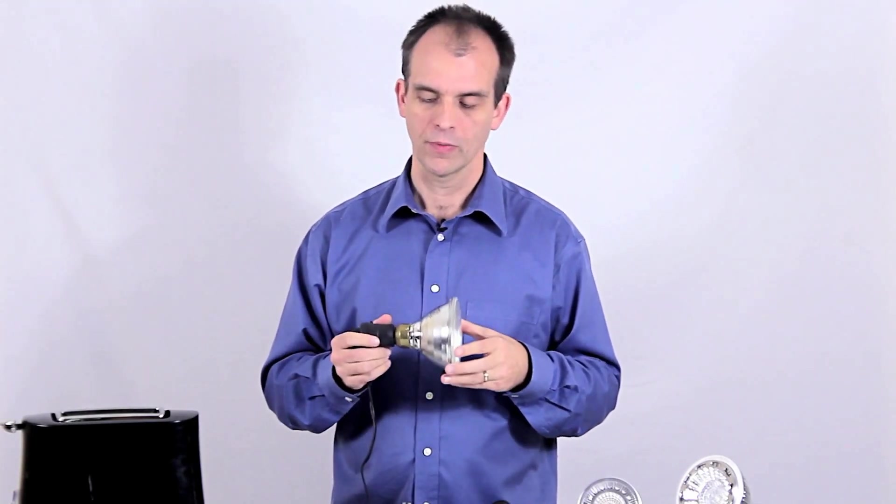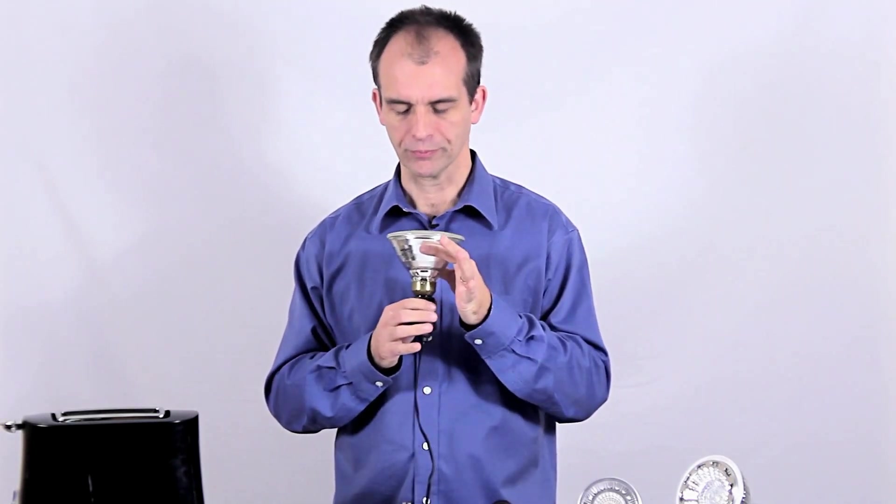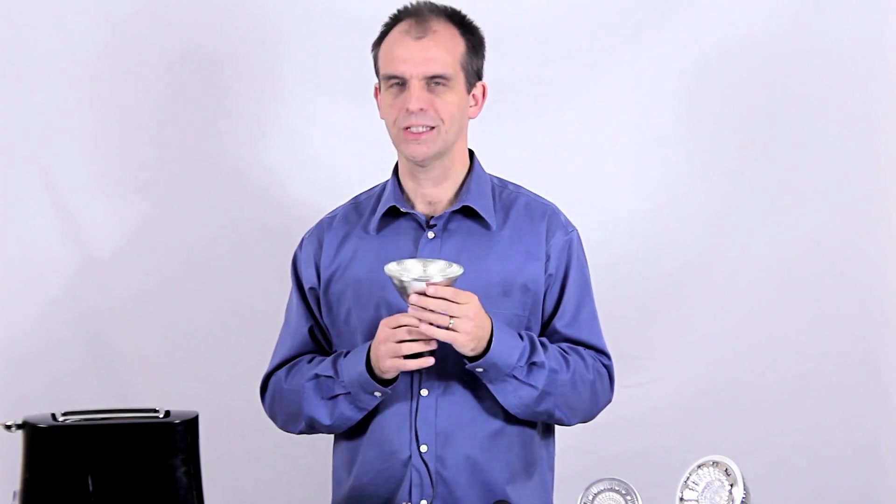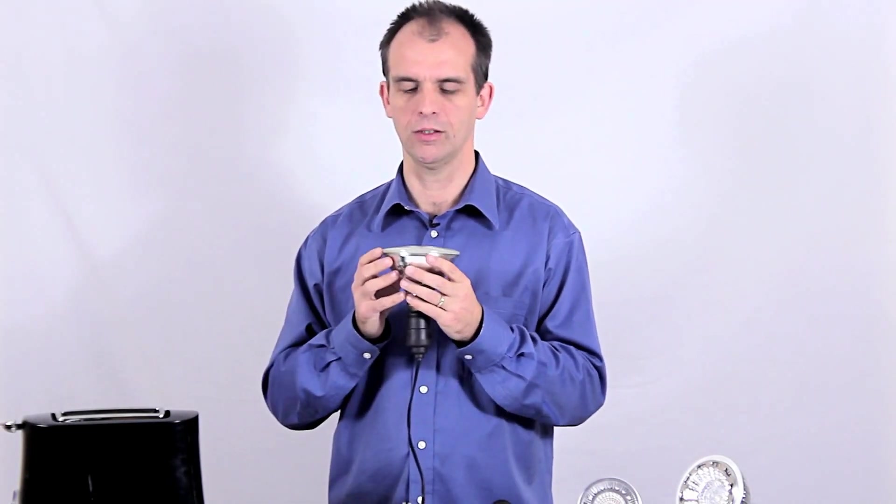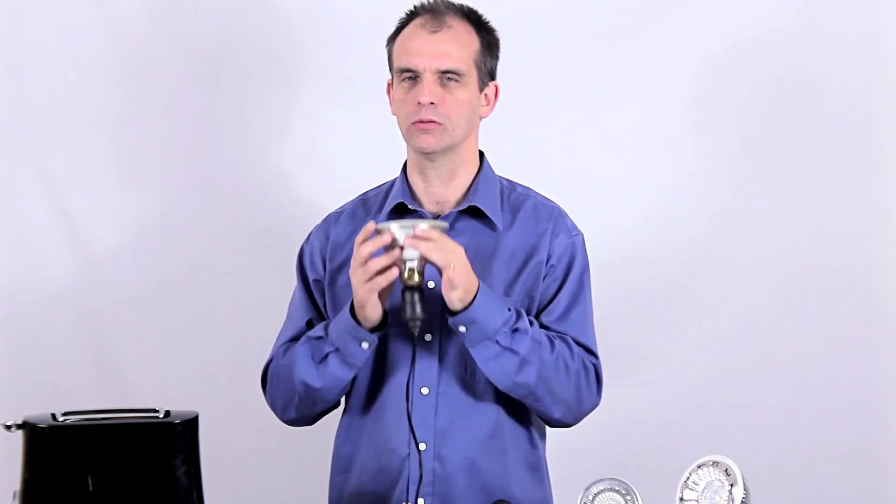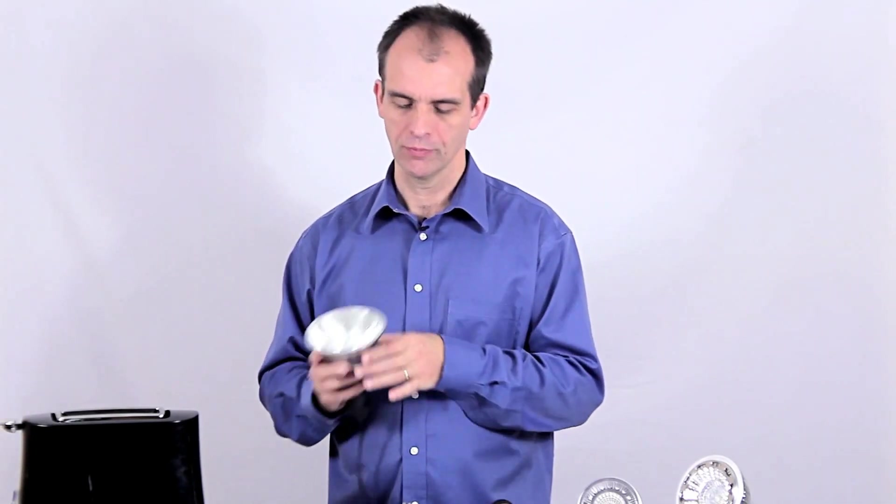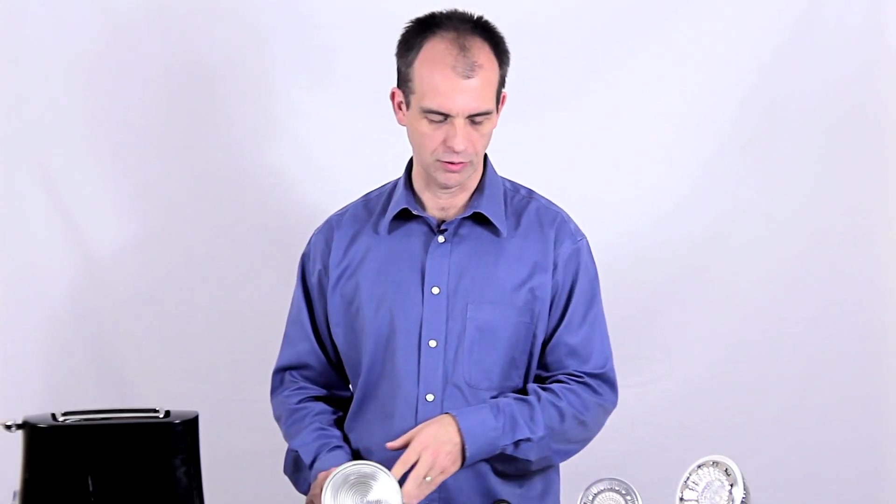A halogen light will burn hotter than an incandescent bulb, which means it can be brighter and the light can be directed via this reflector. But essentially it's the same technology. They've just added quartz and made it so that it can run hotter, run brighter and be directed. In terms of energy use, it's not that different from an incandescent.